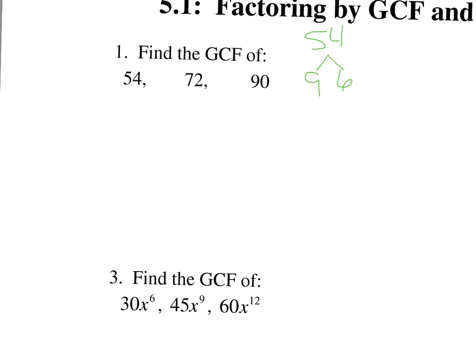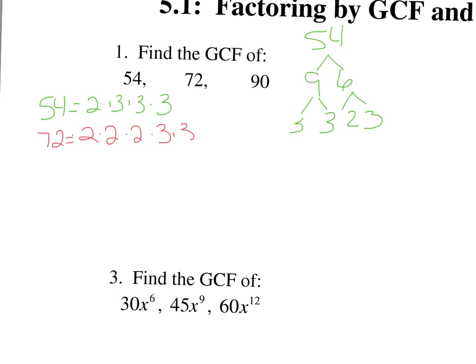54 is 9 times 6; 9 is 3 times 3, and 6 is 2 times 3. So the prime factors of 54 are 2 times 3 times 3 times 3. I do not recommend using exponents for this part because it's harder to see what's in common. 72 is 9 times 8, so 8 is 2 times 2 times 2 and 9 is 3 times 3. If you need to pause the video, do the tree on it. 90 is 9 times 10, which is 2 times 3 times 3 times 5.